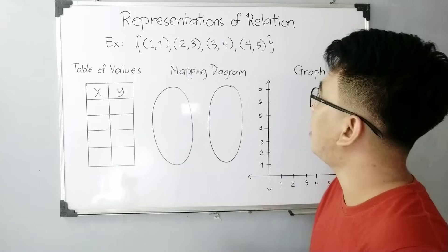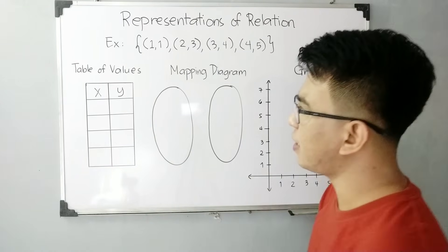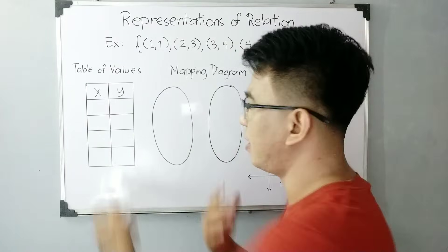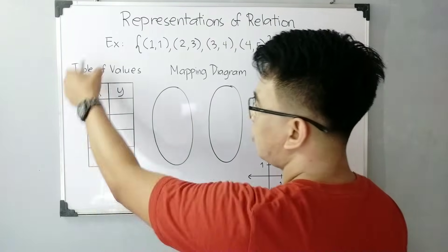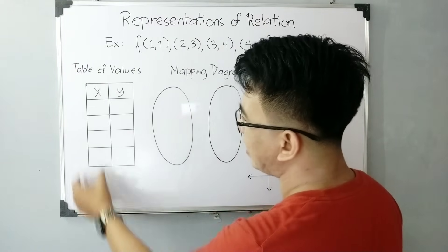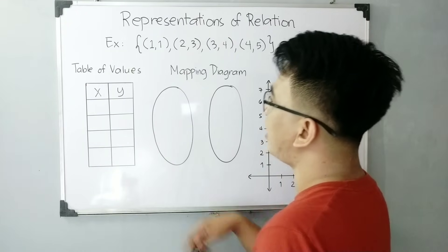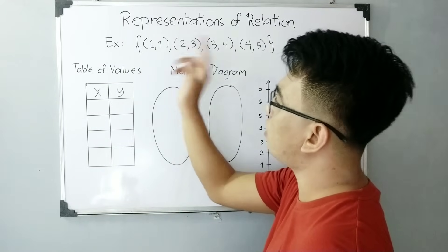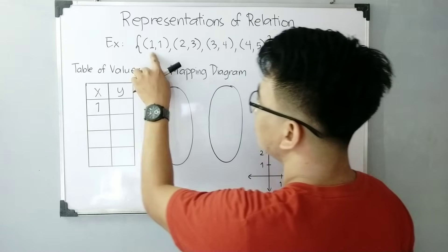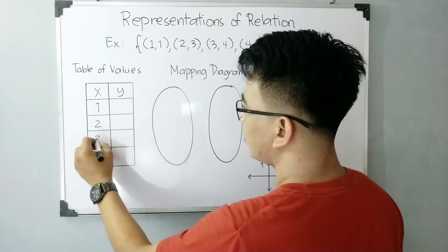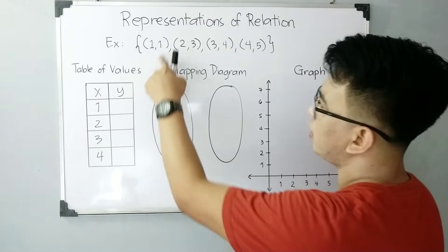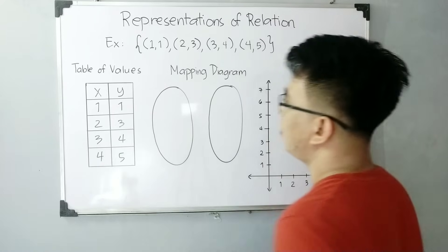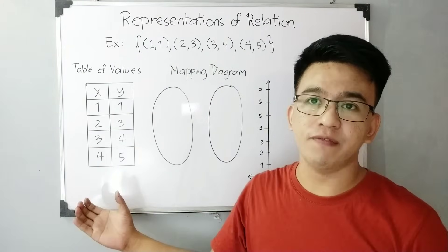The second way, or second representation of a relation, is what we call a table of values. I have here a vertical table of values, but you can also create a horizontal one. For the first part we have the x values, or the domain, and y values, or the range. To transform this into a table of values, list down all values of x: 1, 2, 3, 4. And for y values: 1, 3, 4, and 5. This is the equivalent table of values of our given relation.